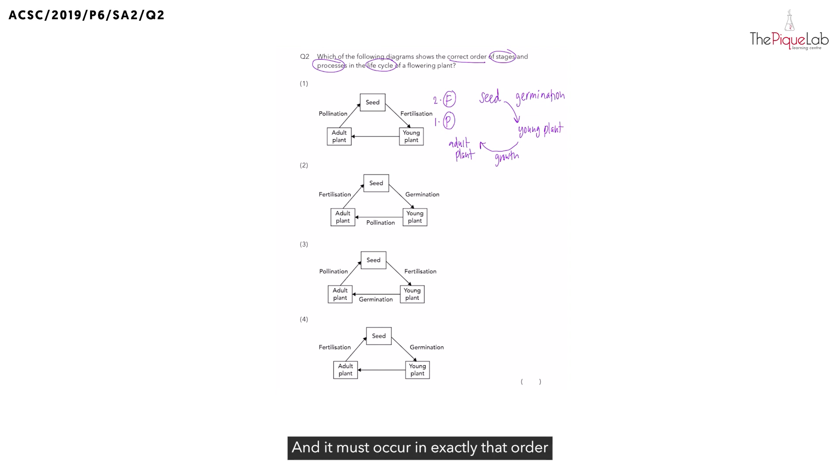And it must occur in exactly that order for the flower to develop to become a fruit. And why is the fruit important? The fruit will actually contain and protect the seeds, and the seeds will go through the process of germination to develop to become a young plant.